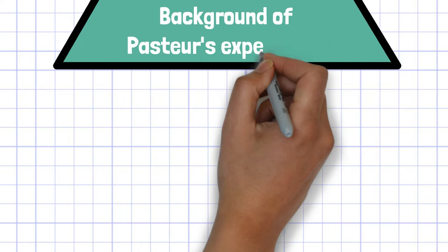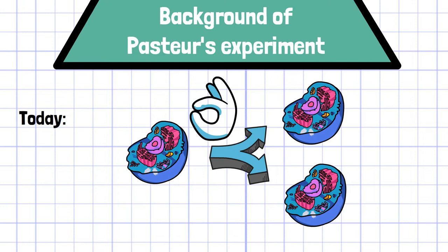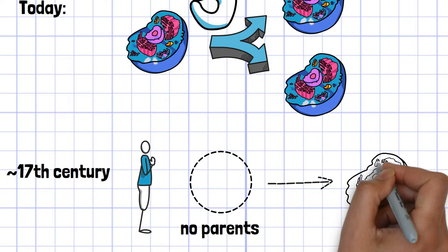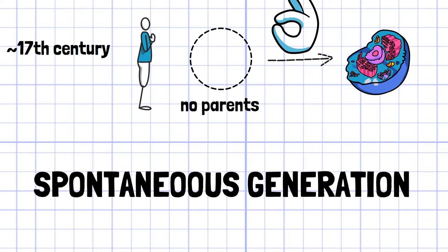Today, we all know that the generation of new life requires pre-existing life. However, until the 17th century, it was strongly believed that lives can be formed without parental organisms. This theory is called spontaneous generation of life.